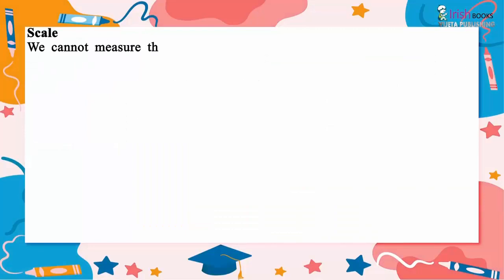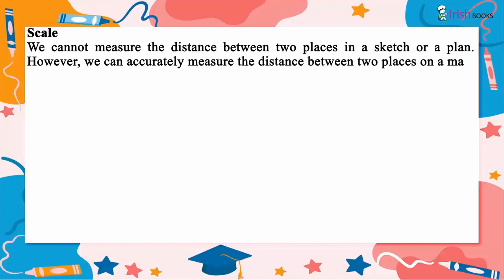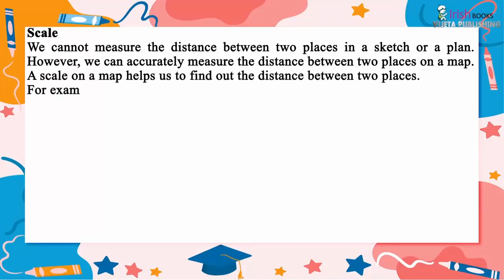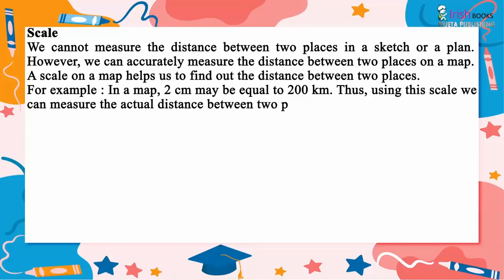Scale. We cannot measure the distance between two places in a sketch or a plan. However, we can accurately measure the distance between places on a map. A scale on a map helps us to find out the distance between two places. For example, in a map, two centimeters may be equal to 200 kilometers. Thus, using this scale, we can measure the actual distance between two places.